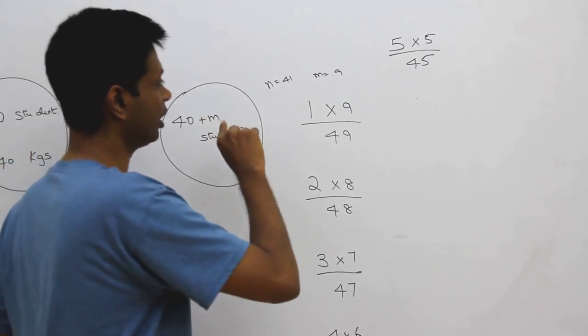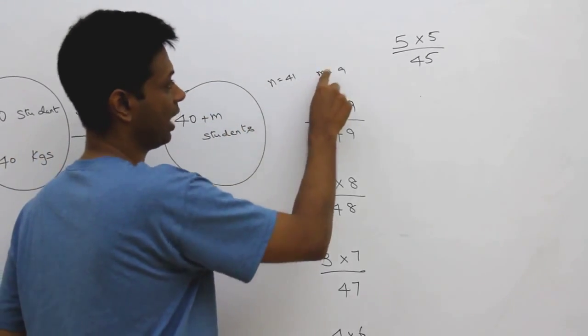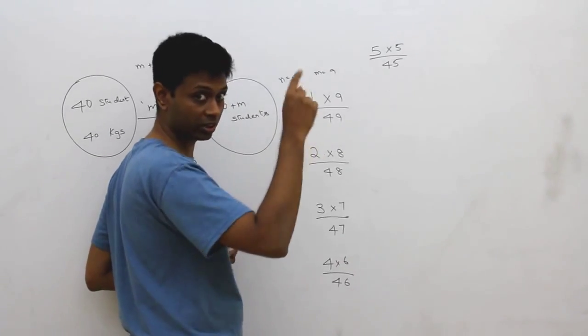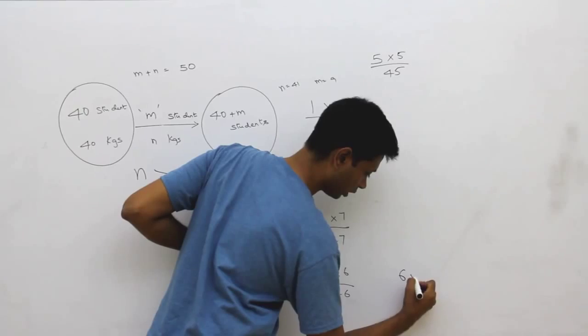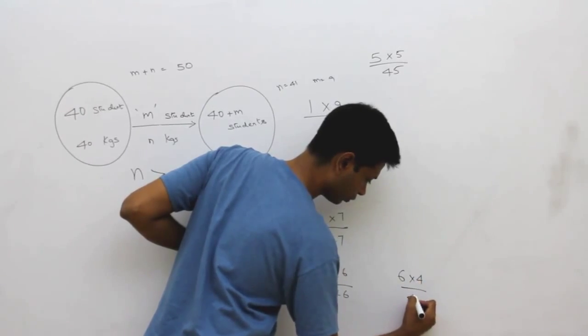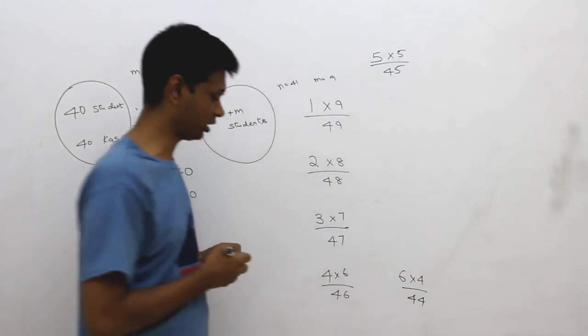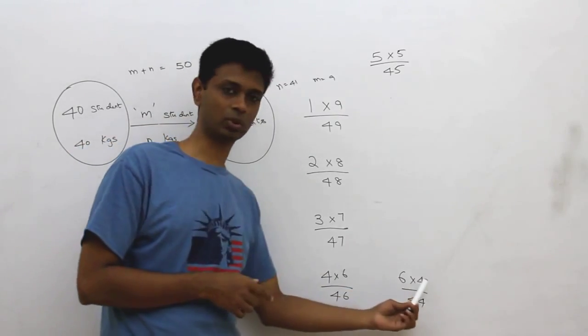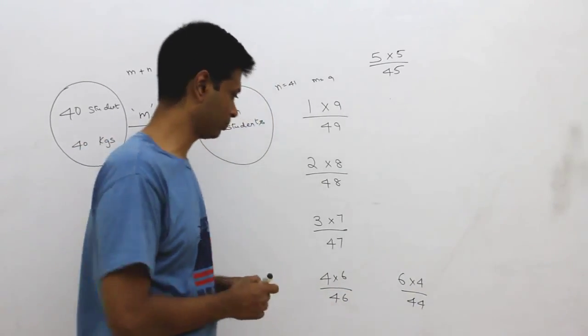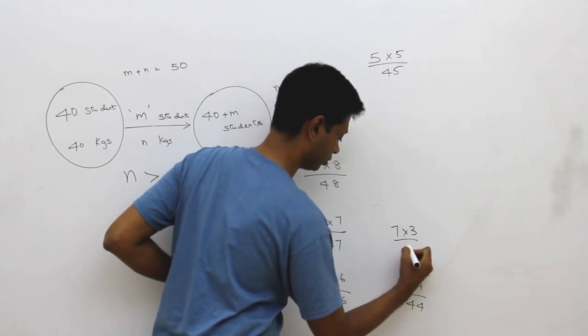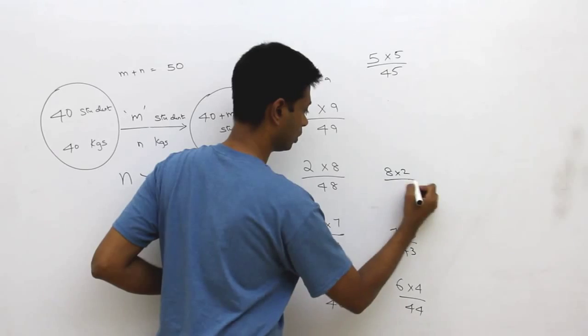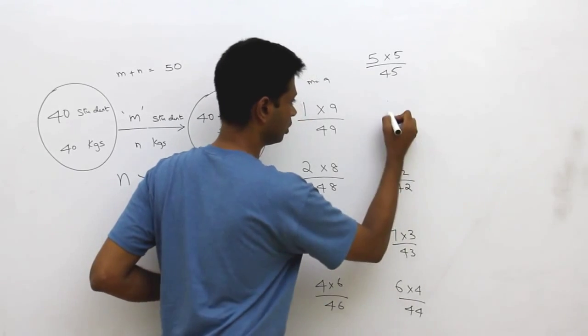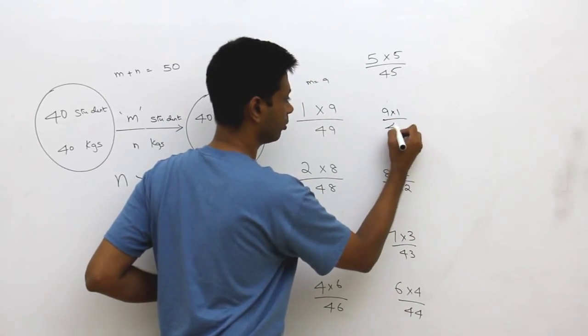Next step. When n becomes 46 and m is 4. Each student brings in 6 extra kilograms. 4 extra students. So, 6 into 4 by 44. I am writing this down here. This is 4 into 6, that is 6 into 4. 6 into 4 by 44. Now, I am going to just fill in the data. 7 into 3 by 43. 8 into 2 by 42. 9 into 1 by 41.